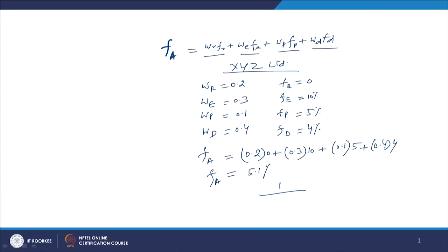Now we have to add this flotation cost into the total project cost, as we did in the second approach. To adjust it, we calculate 1 divided by (1 minus F_a), which is 1 divided by (1 minus 0.051). This works out as 1.054. This figure has come up after adjusting the flotation cost for all four sources of funds — it is called the adjustment factor of 1.054.